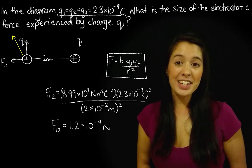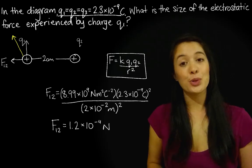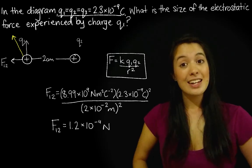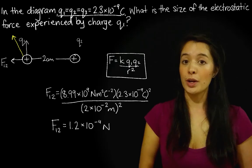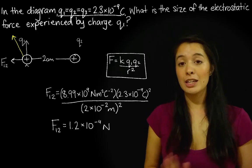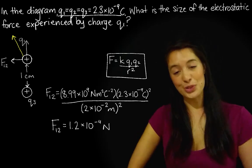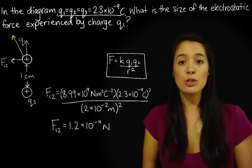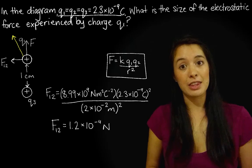Cool. So we've calculated the size of the force between Q1 and Q2. Now we just need to calculate the size of the force between Q1 and Q3 using the exact same method. So let's bring back Q3 and get rid of Q2. And let's call the force between Q1 and Q3 F13.